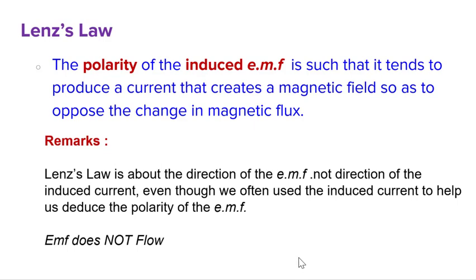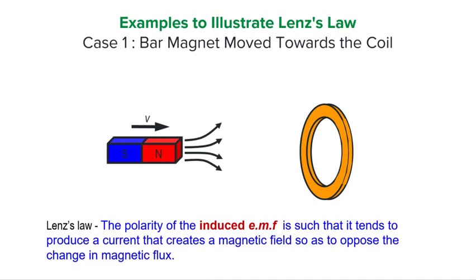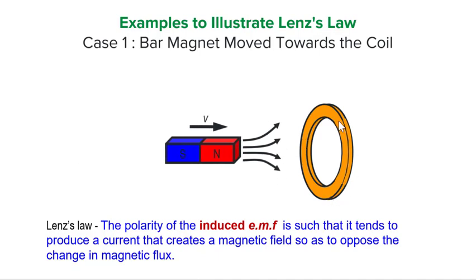EMF is not a current, but it can cause an induced current to flow. With this, we can now explain what it means when we say that the polarity of the EMF is such that it tries to oppose the change in the magnetic flux that causes it. To illustrate, we consider the case of a bar magnet that is moving towards a coil and use Lenz's Law to explain the polarity of the EMF. As the bar magnet moves near the coil, the coil experiences an increase in flux linkage.